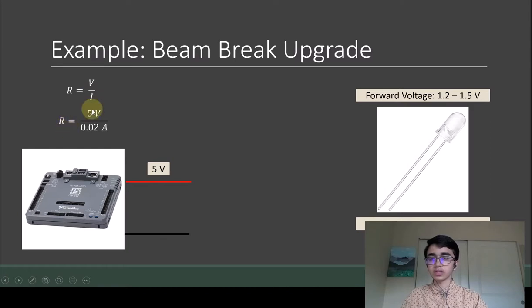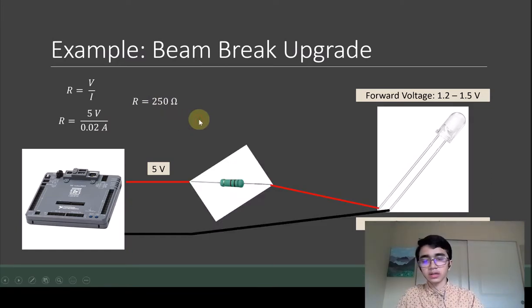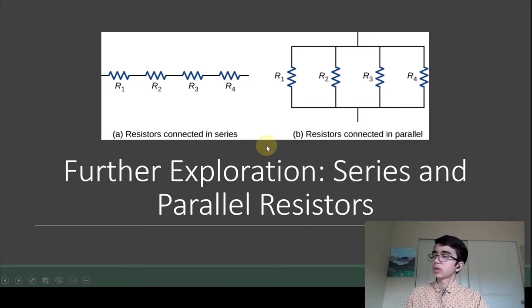So we plug in the appropriate values: resistance equals 5 volts over 0.02 amps. If we evaluate, we get R equals 250 ohms. So we ask business to get the 250 ohm resistor, plug it in, and there we go - we have a working transmitter.